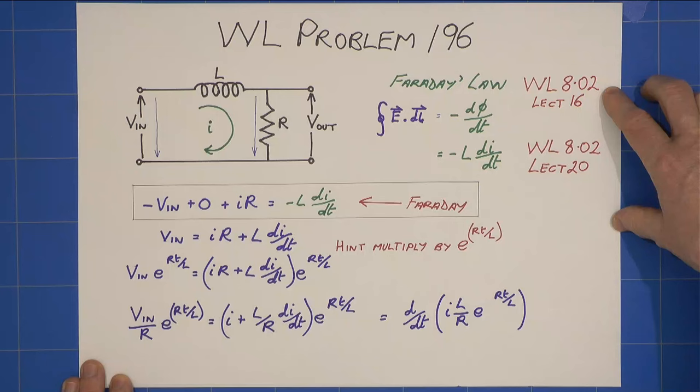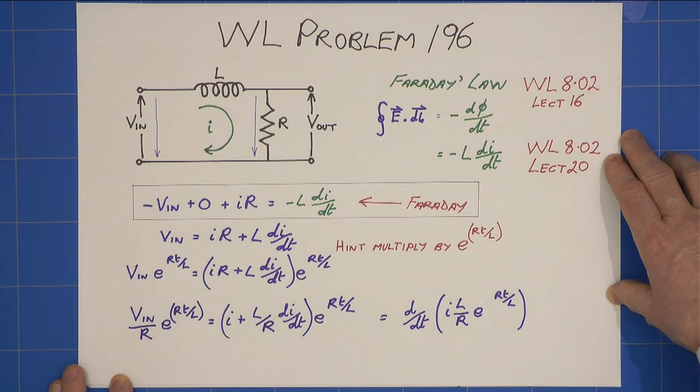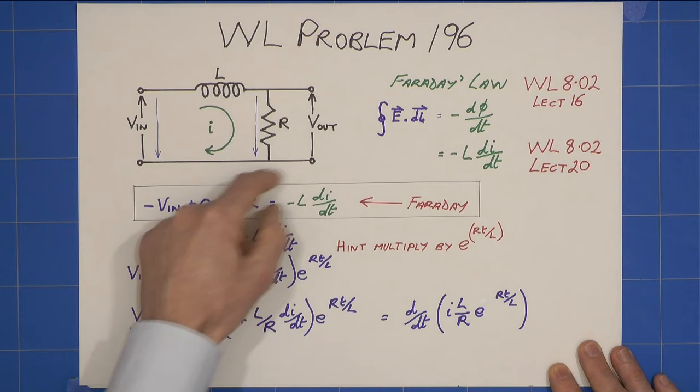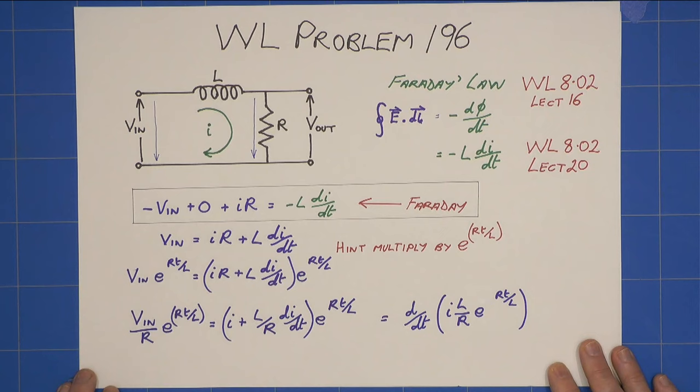We need to know about Faraday's law, Walter Lewin 802 Lecture 16, and also the definition of inductance, self-inductance, again 802 Lecture 20. So let's apply Faraday around this loop. There is some dphi by dt changing around here due to the self-inductance, and we have an integral e.dl to perform.